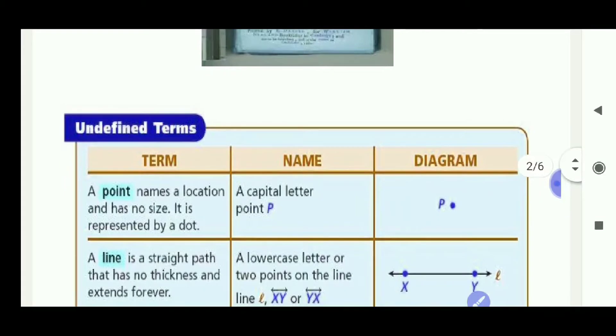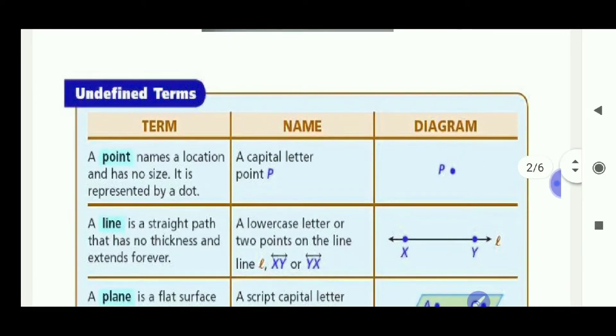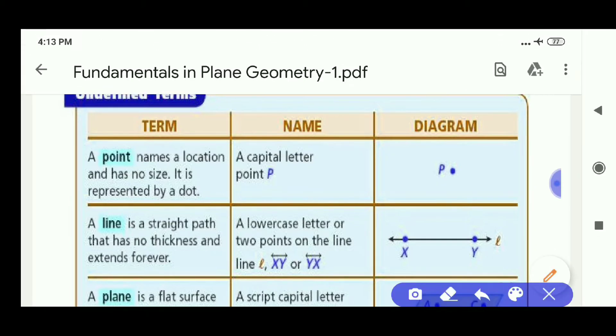In Euclidean geometry, there are some undefined terms. The first undefined term is a point. Point is used for location. It has no size. It is denoted with capital letters like capital P, capital A, capital B, like that.